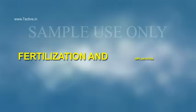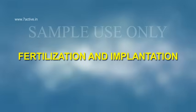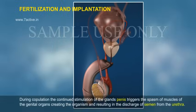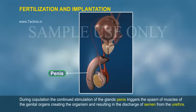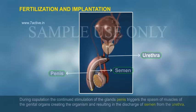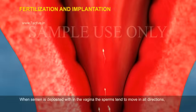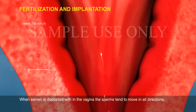Fertilization and Implantation. During copulation, the continued stimulation of the glans penis triggers the spasm of muscles of the genital organs, creating the orgasm and resulting in the discharge of semen from the urethra. When semen is deposited within the vagina,